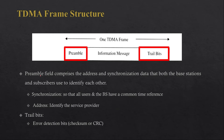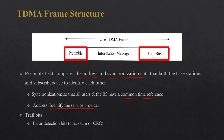The preamble field comprises the address and synchronization data that both the base station and subscriber use to identify each other. The preamble provides addressing information to the base station or mobile station and is used for synchronization — since information is transmitted in time slots, the timing of both the base station and mobile system must be common. Trail bits, sent at the end, are used for error detection and correction, such as checksum or CRC.